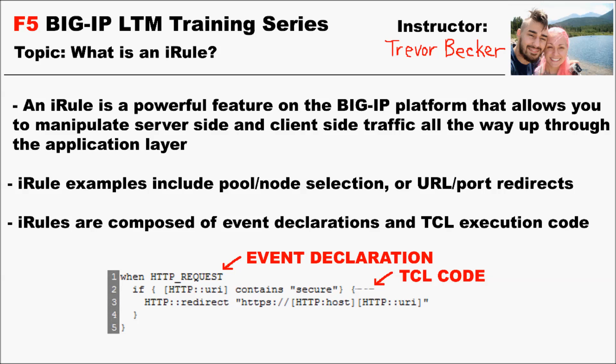An example of a decision an iRule could trigger on would be a pool or node selection to act as a resource for a client's request. Another common example of a decision an iRule could make would be a URL redirect.